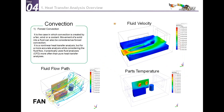The second type of heat transfer is convection. Forced convection transfers heat through fluid movement driven by a fan, wind, or coolant. It is generally a nonlinear heat transfer analysis because it considers transient flow, and it practically uses CFD analysis more than structural analysis. An example shown is the cooling of a PCB with a fan on the left driving fluid to cool the components.